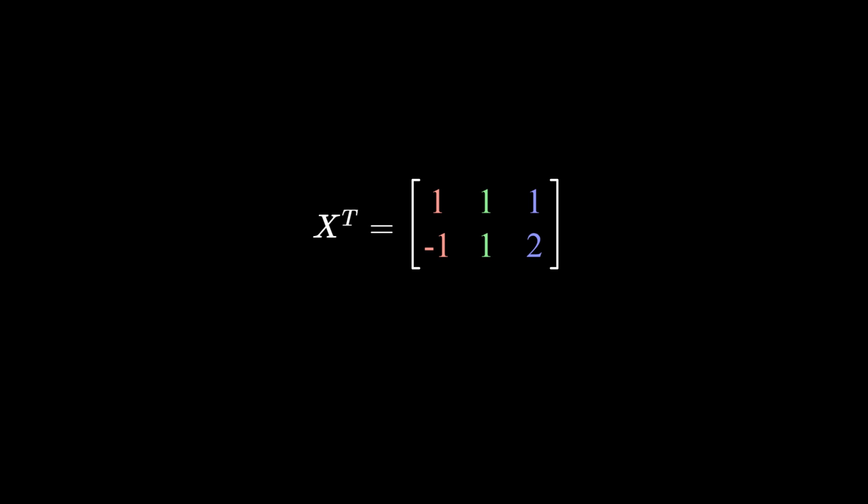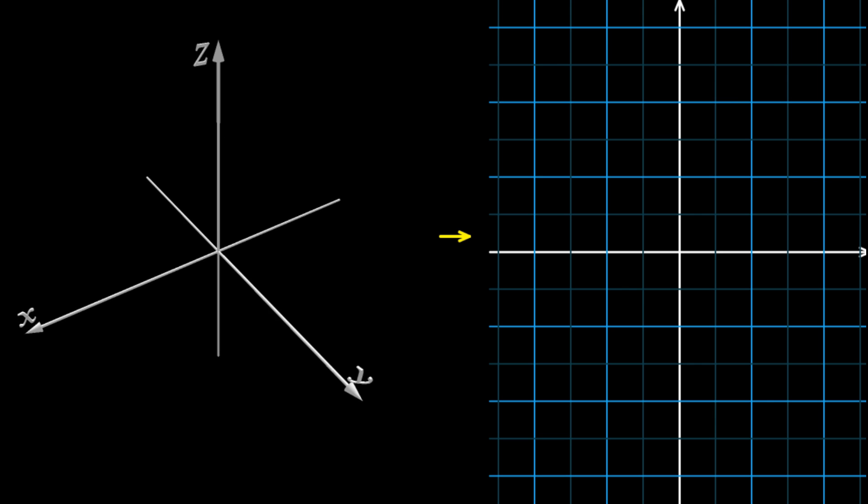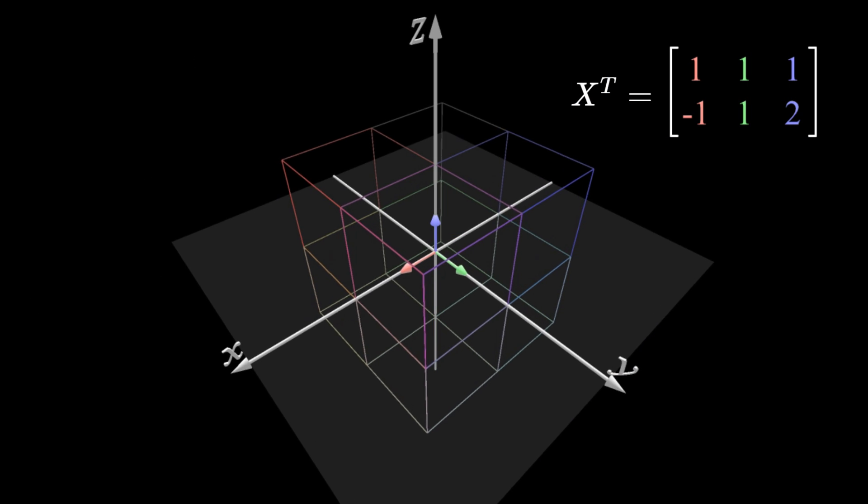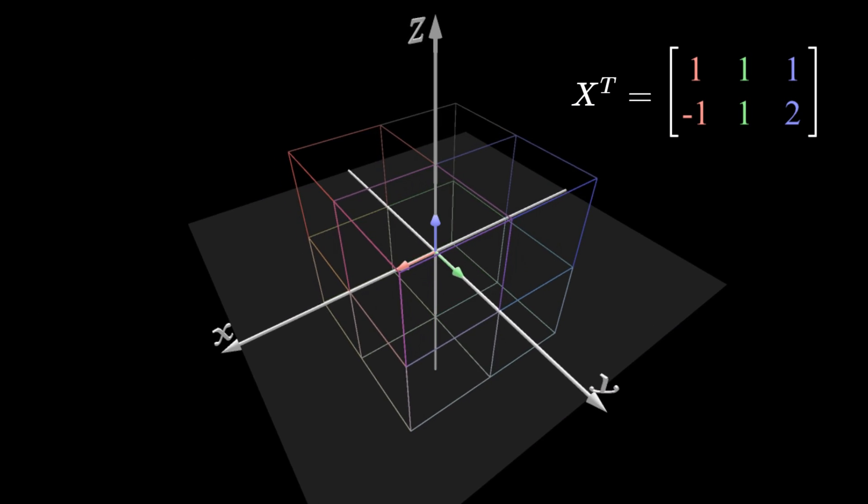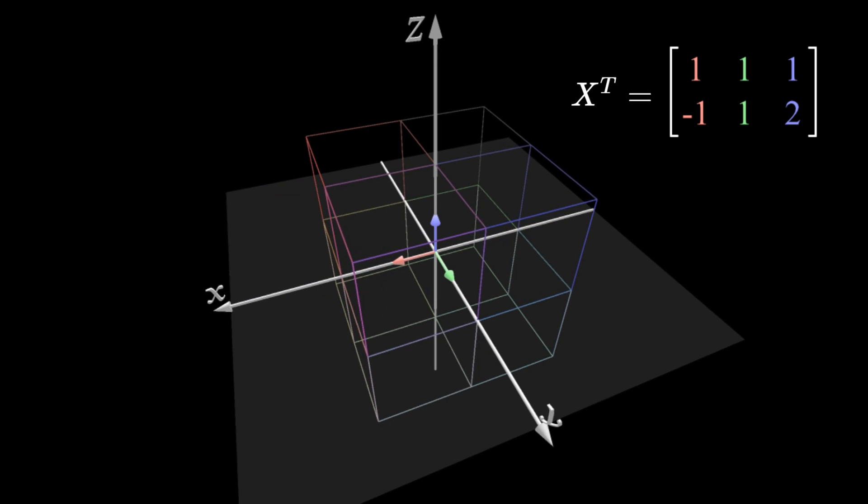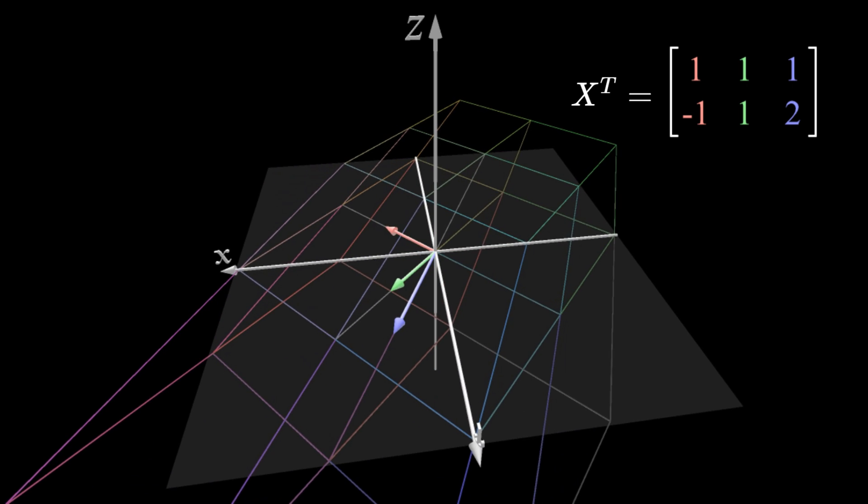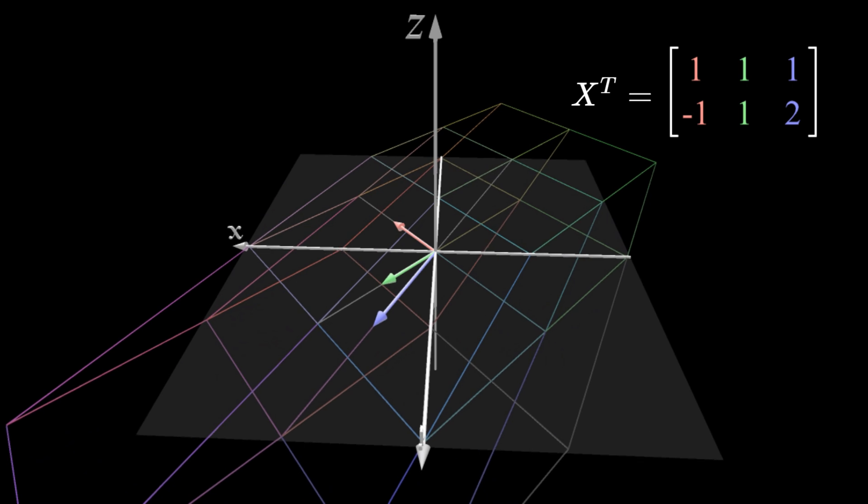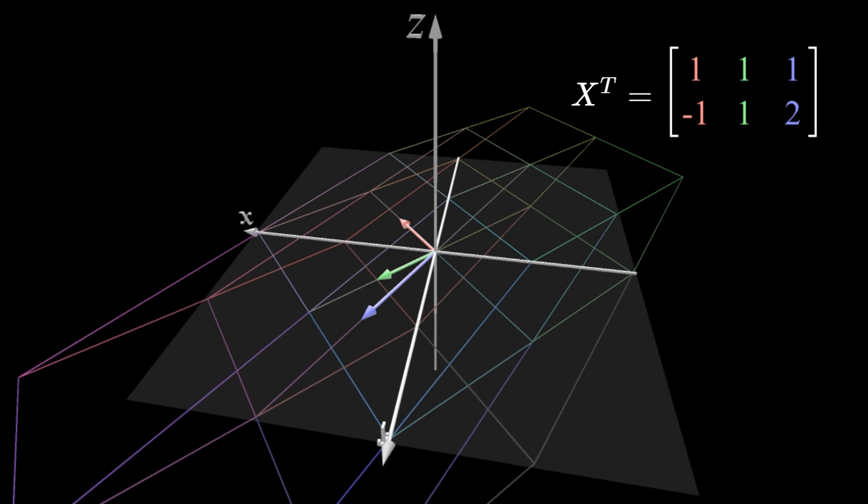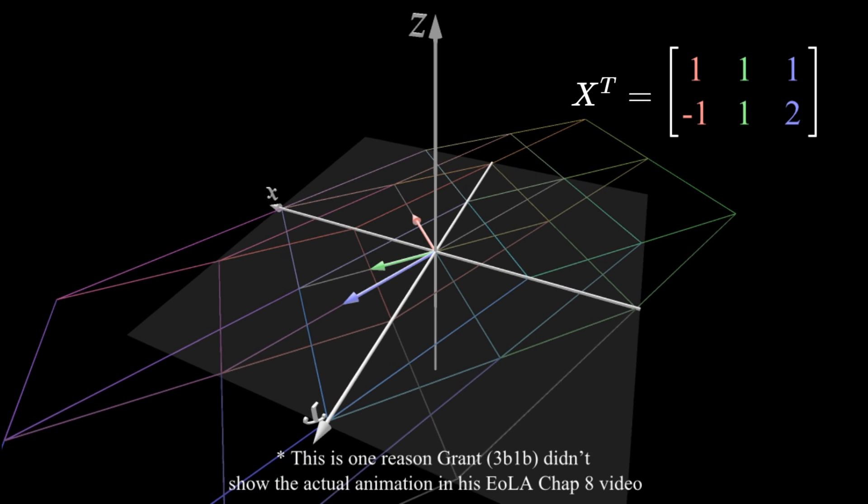We can think of this X transpose as encoding a linear transformation from 3D space to 2D space. Here I have shown the three basis vectors in 3D space. We can imagine the three columns of X transpose as telling where those three basis vectors should each land after the transformation. Notice, the animation makes it seem that the transformation goes from 3D space onto the XY plane, which is still in 3D space.